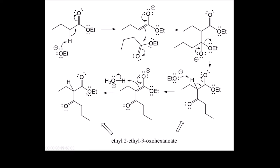For naming this product, the ester is the highest priority functional group. The longest continuous chain of carbons extending off the ester has six carbons, so this is a hexanoate. Coming off of the ester is an ethyl group, so that goes out in front. Then we list alphabetically the different substituents coming off the hexanoate.